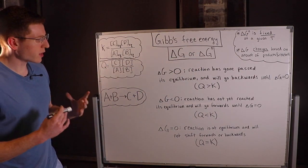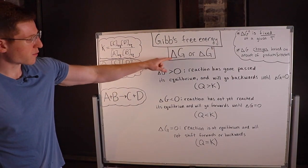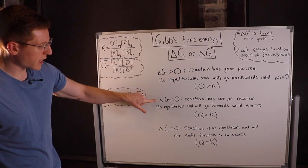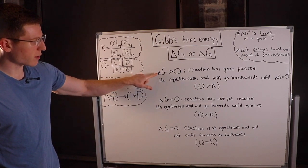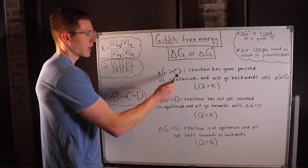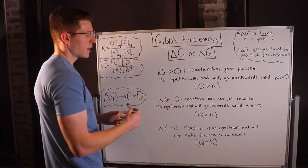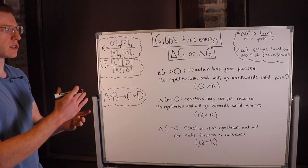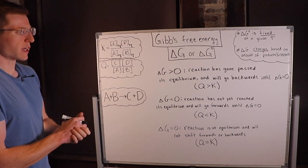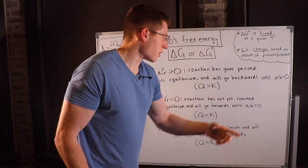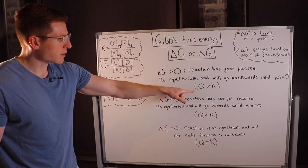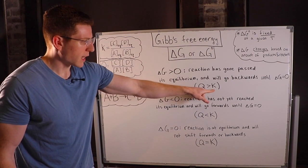There are three cases you should know for this flexible delta G. It can be positive, negative, or zero. If delta G is greater than zero, your chemical reaction has gone past its equilibrium and it will go backwards until delta G equals zero. Nature always wants to use up all of its free energy and wants delta G to be at zero. When delta G is greater than zero, that means Q is greater than K.